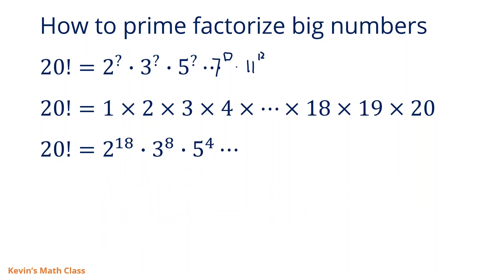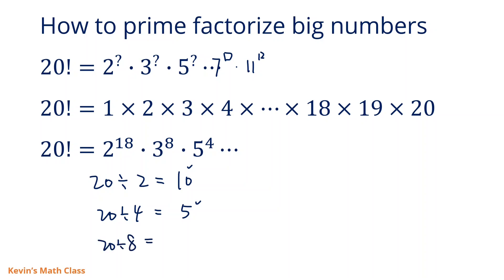For the power of 2: 20 divided by 2 is 10, so there are 10 multiples of 2. Then 20 divided by 4 gives 5 extra, 20 divided by 8 gives 2 extra, and 20 divided by 16 gives 1 extra. Adding together: 10 + 5 + 2 + 1 = 18, so it's 2 to the power of 18. This method is very useful.